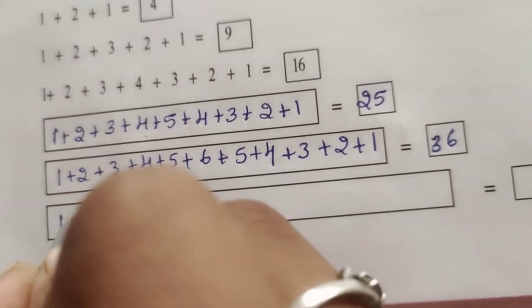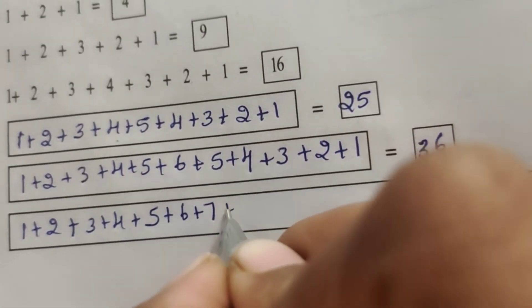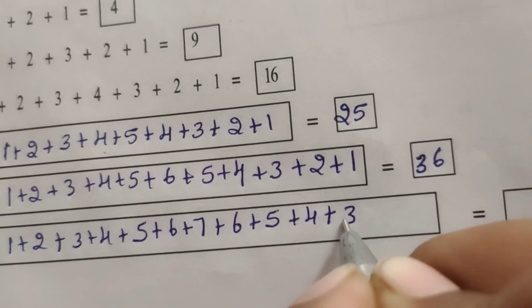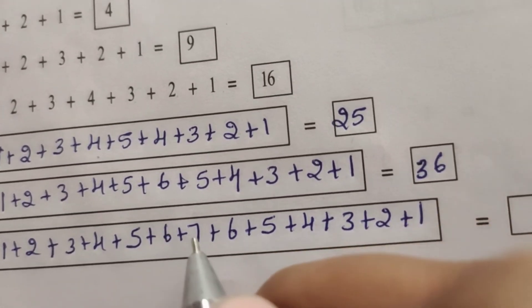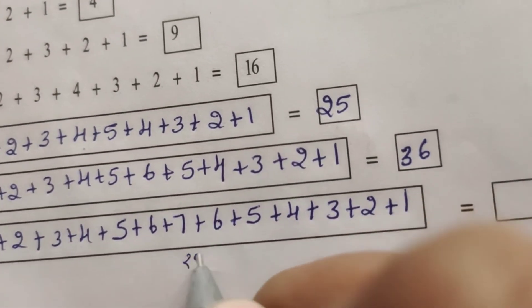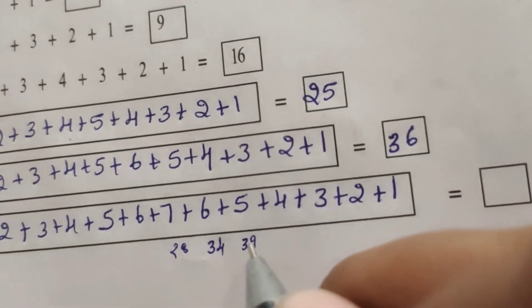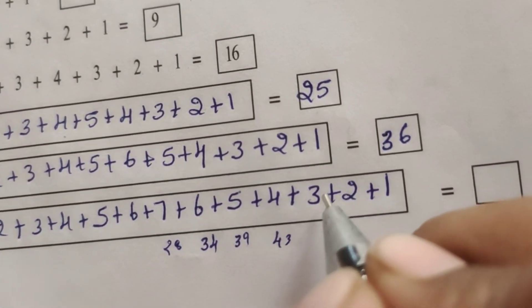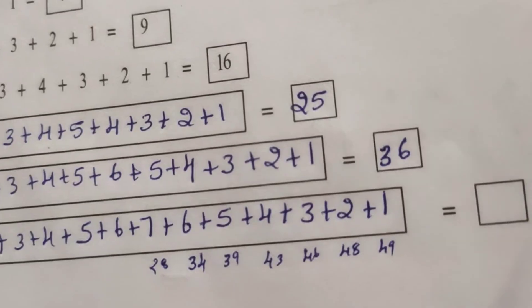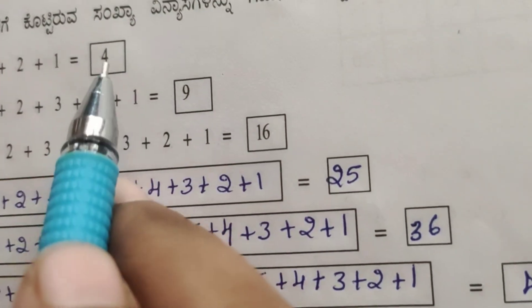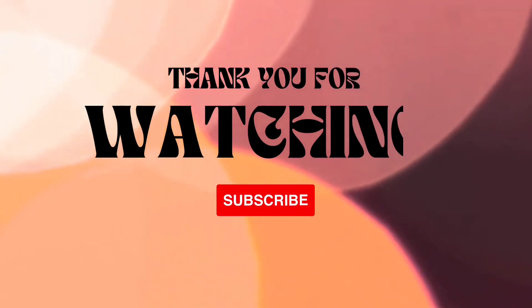Last one: 1 plus 2 plus 3 plus 4 plus 5 plus 6 plus 7 plus 6 plus 5 plus 4 plus 3 plus 2 plus 1. Adding step by step: 15 plus 6 is 21, plus 7 is 28, plus 6 is 34, plus 5 is 39, plus 4 is 43, plus 3 is 46, plus 2 is 48, plus 1 is 49. So the answers 4, 9, 16, 25, 36, 49 are all square numbers. See you in the next class, thank you.